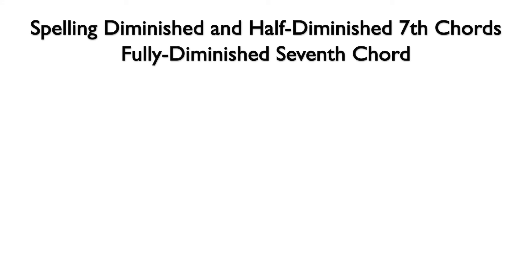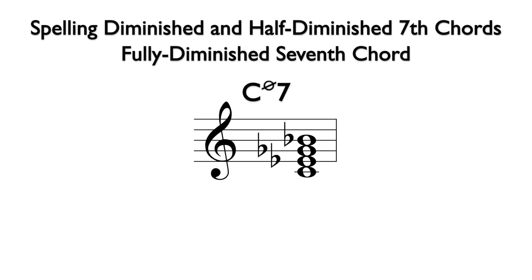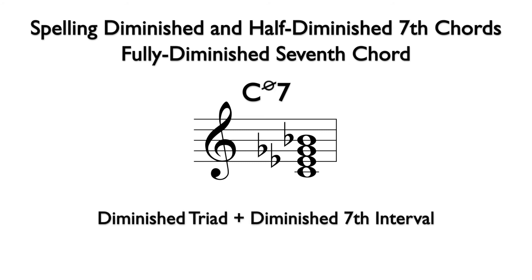The term fully diminished 7th is used because both the triad and the 7th are diminished. So the formula is a diminished triad plus a diminished 7th interval above the root. Here is the chord we notated as a half-diminished 7th chord. To make it a fully diminished 7th chord, we need a diminished 7th interval from the root. C to B flat is already a minor 7th, so if we lower the B flat to B double flat, it becomes a diminished 7th interval.